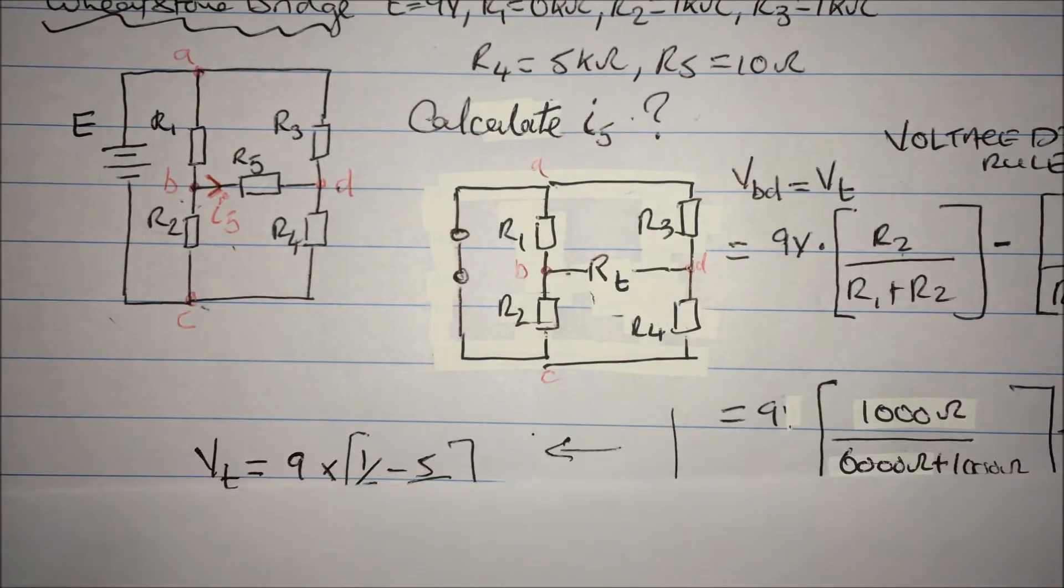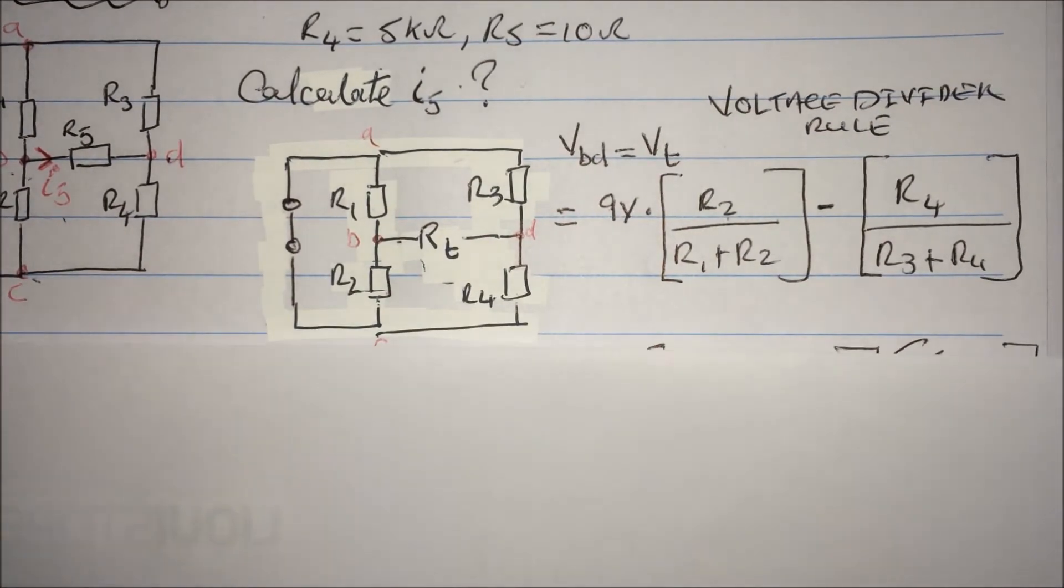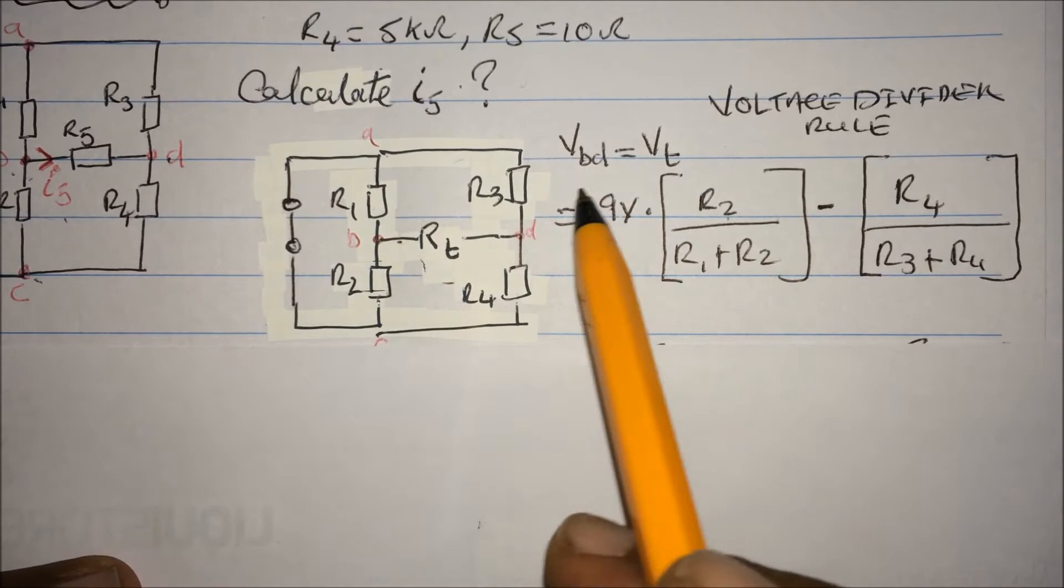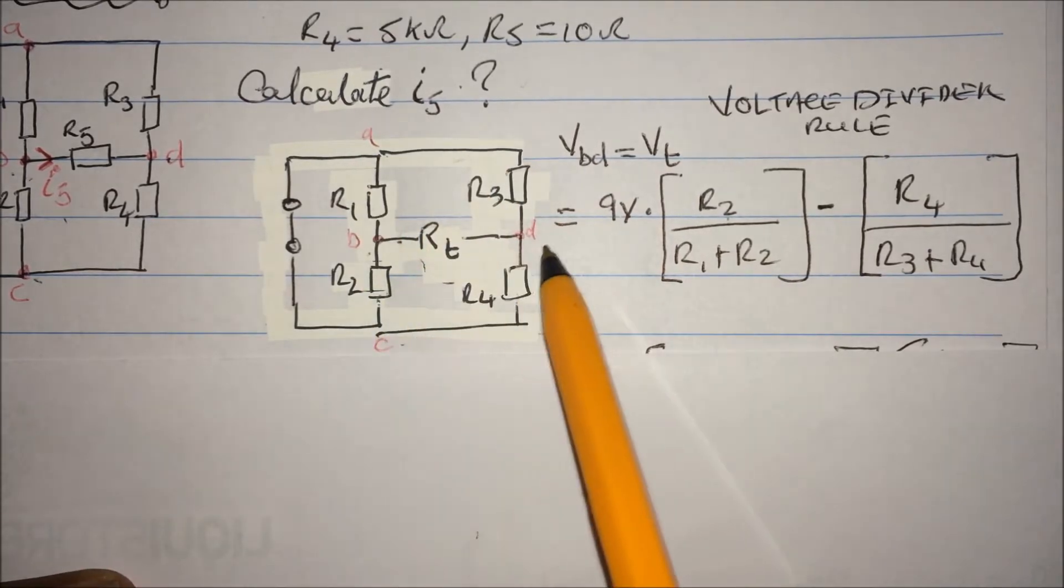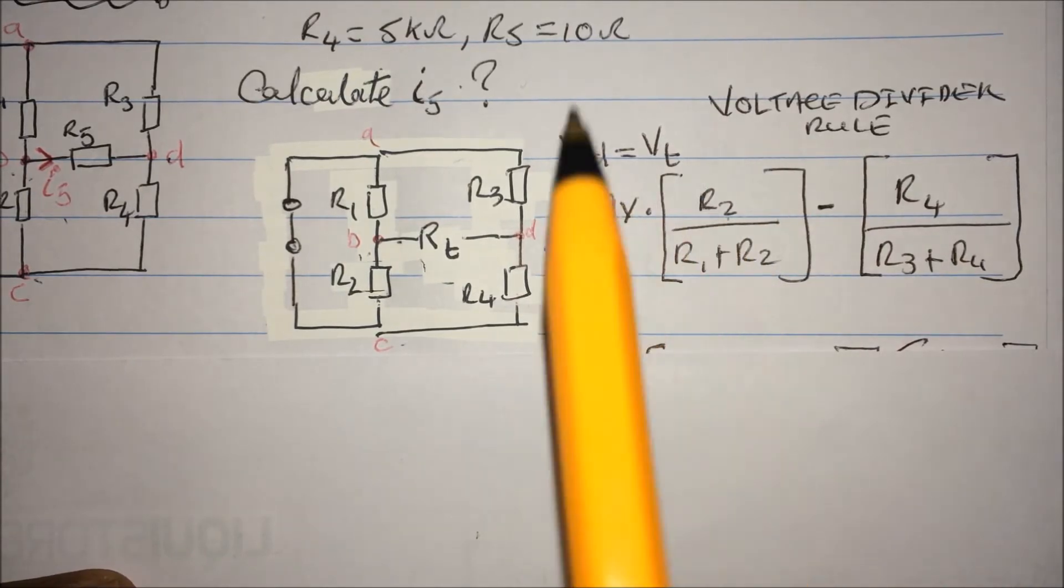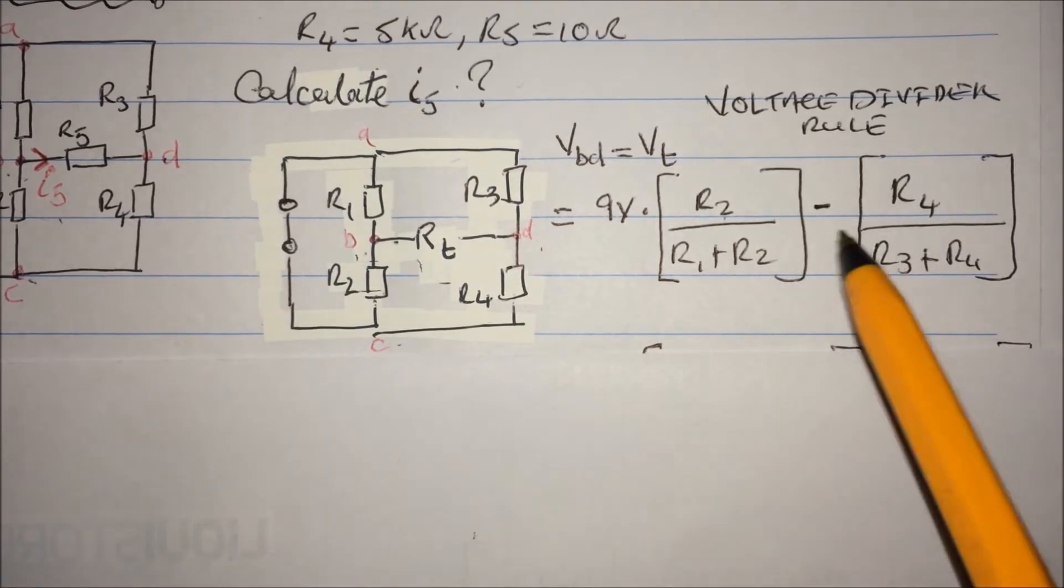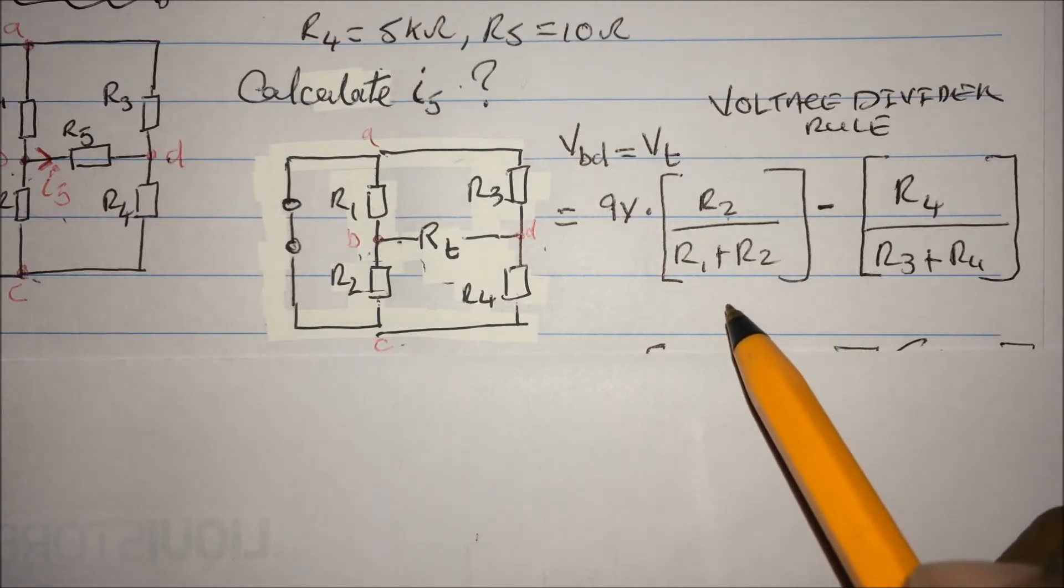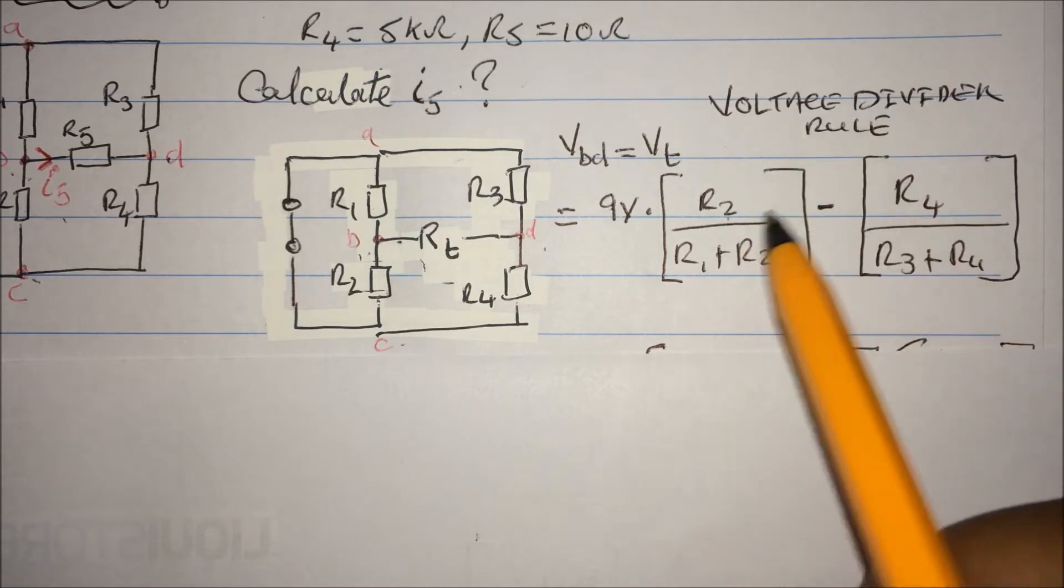So basically what's gonna happen is we're just gonna use the voltage divider rule. So I've mentioned that this is A, B, C, and D. So we want to find the voltage between here, we leave that R5 in. So basically it's just voltage divider, and you will have to make sure you understand voltage divider before you try to attack this problem. Don't try to overthink it.